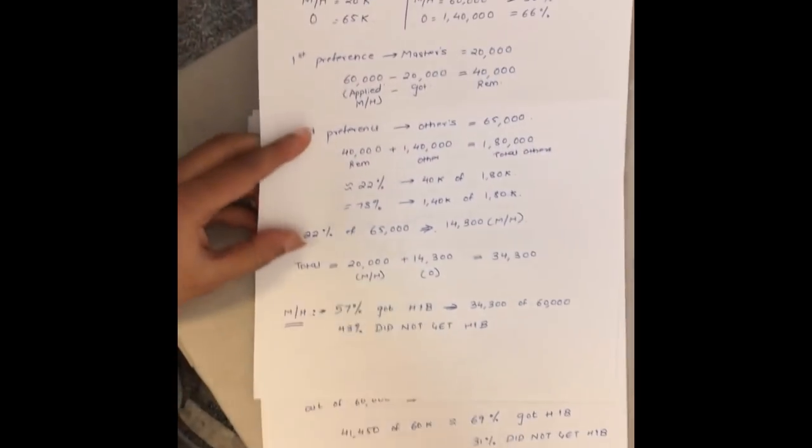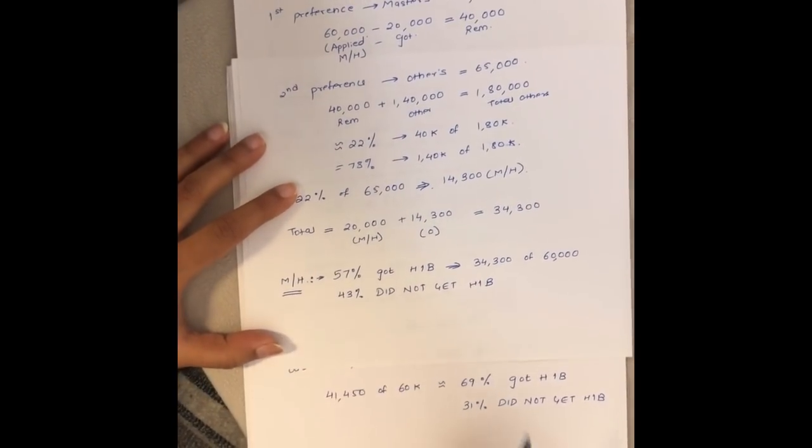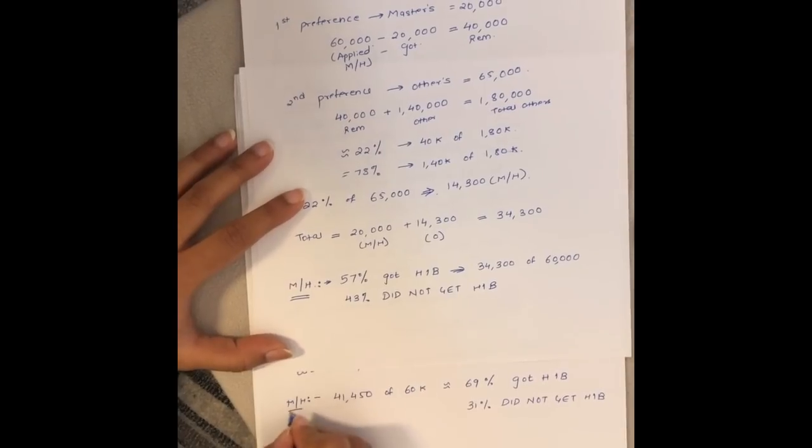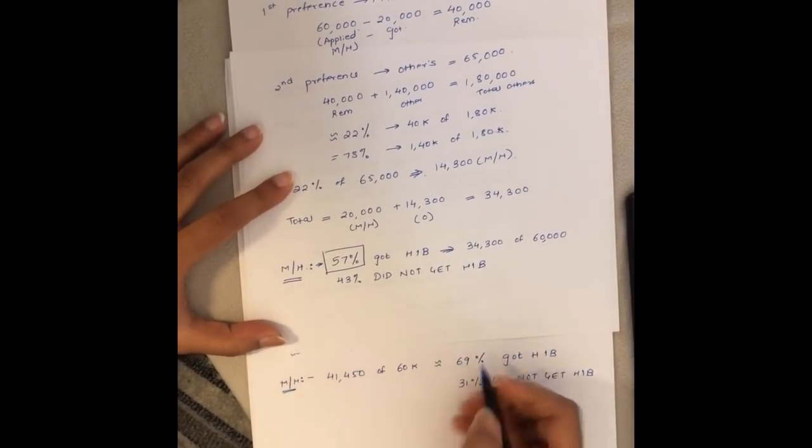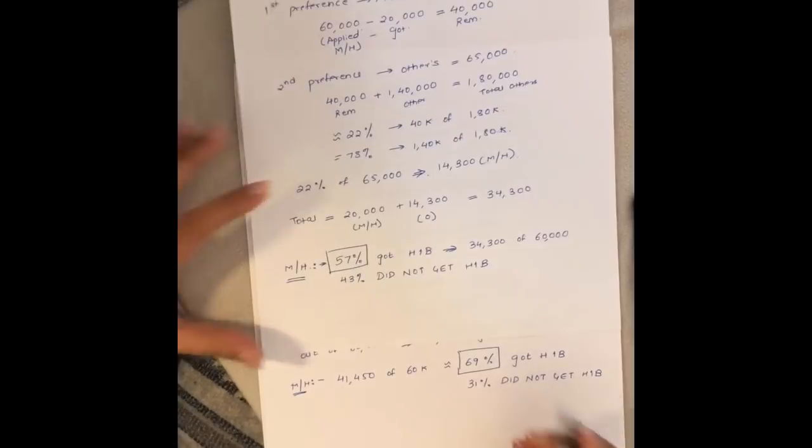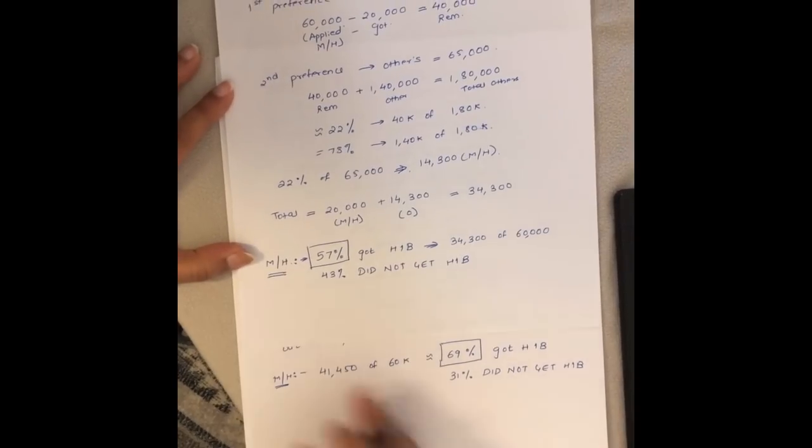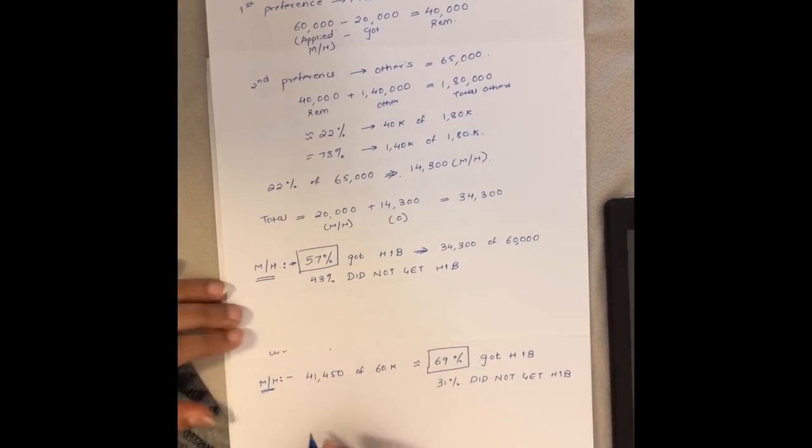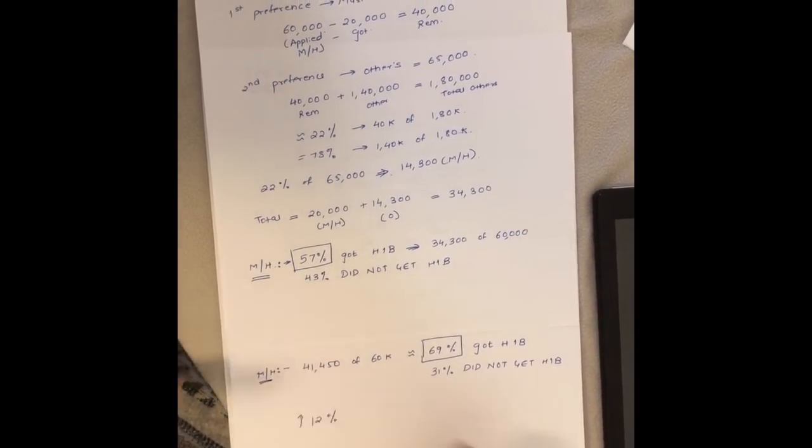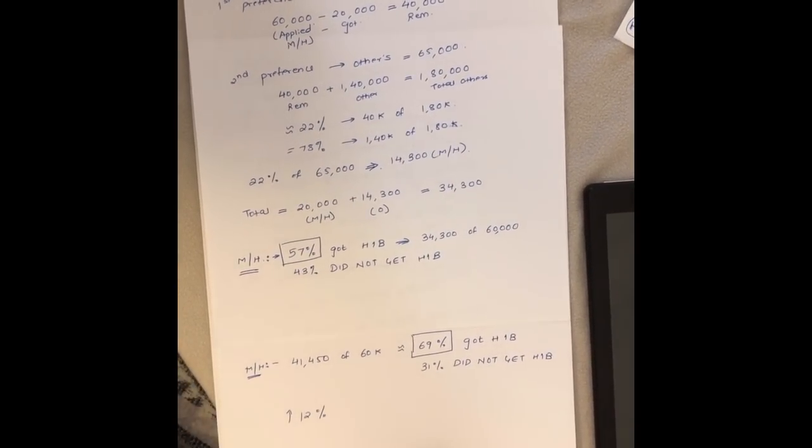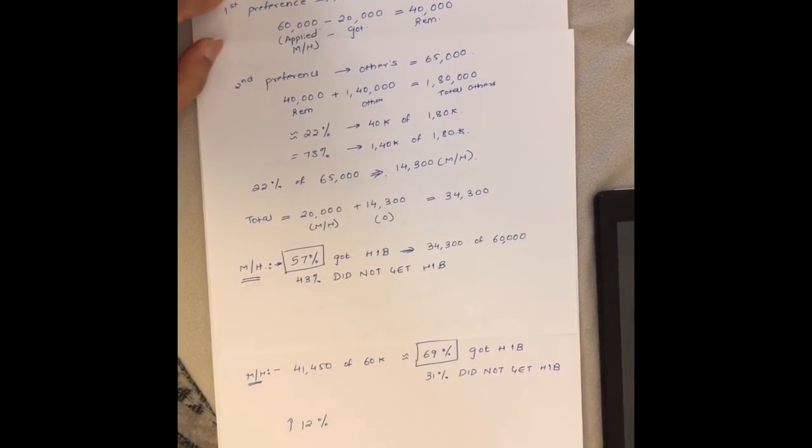If you compare the previous one with the new one, in the previous system for masters or higher you had 57 percent who got H1B, and in the new one you have 69 percent. Per our calculations, which are just estimations, there is an increase by 12 percent. Considering this could be plus or minus with many factors, this is helpful for masters students.